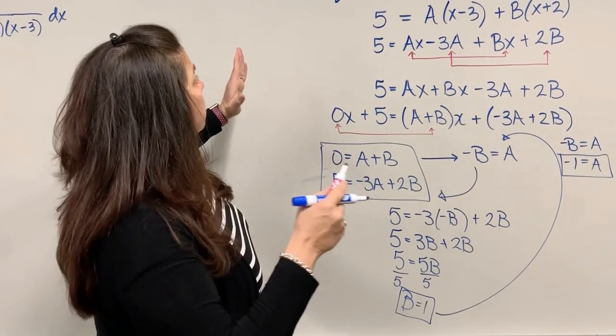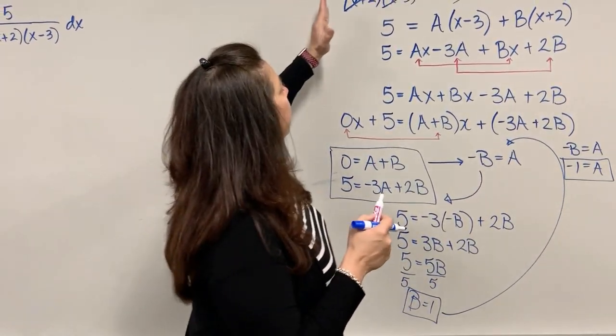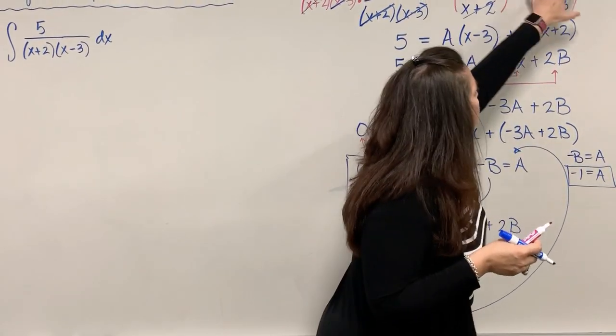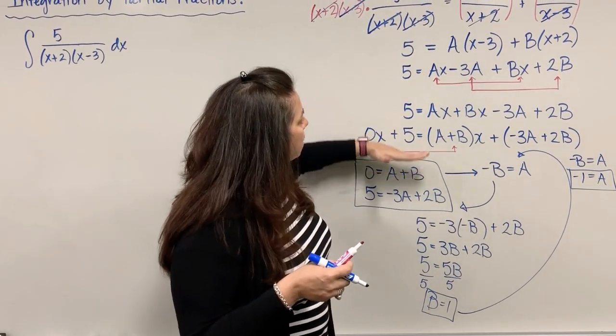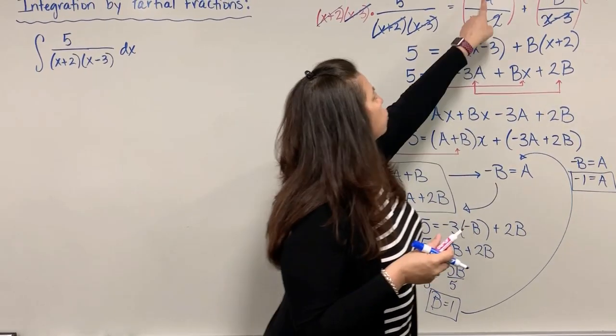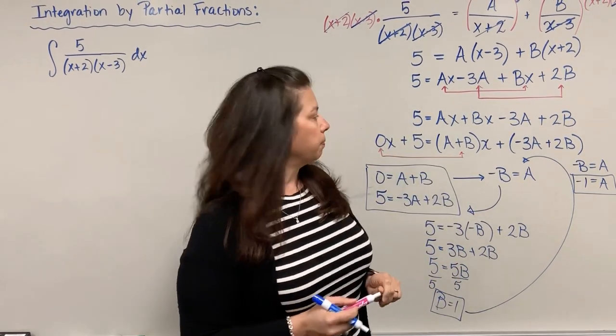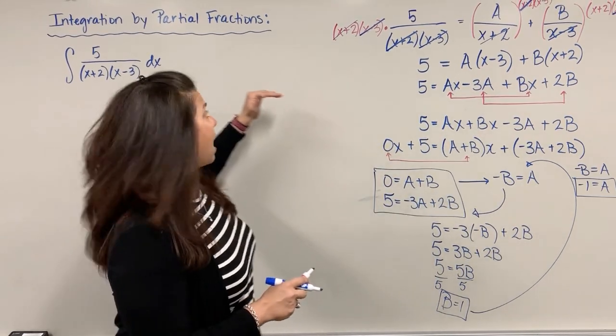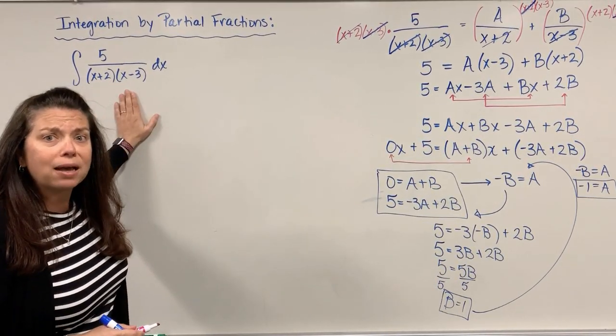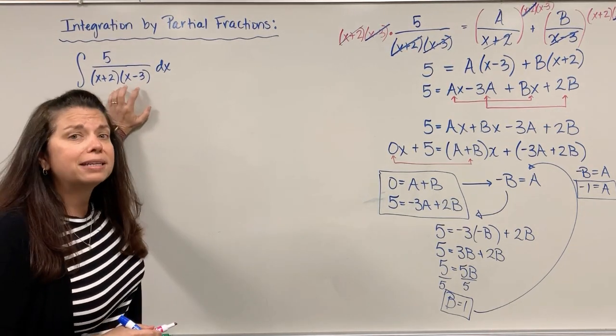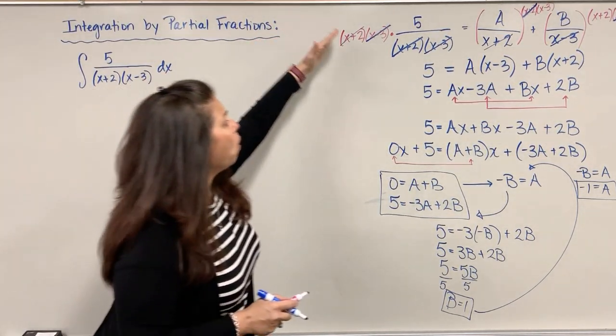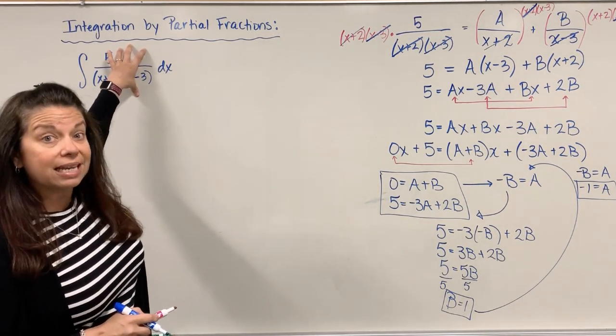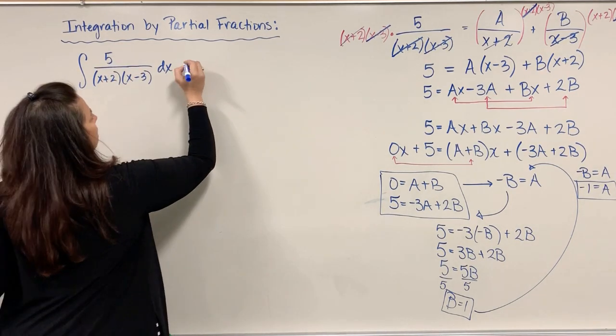All of this was just this technique of finding a partial fraction, taking a fraction and decomposing it into two separate fractions and then using our techniques of algebra to solve for what those numerators are. So now once I have that set up, I have to go back to my original problem.